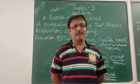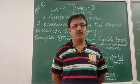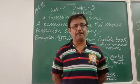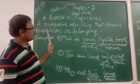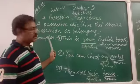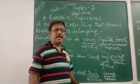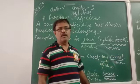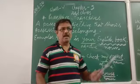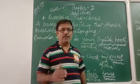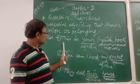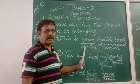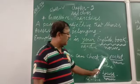Anyway, today I will teach you the 6th type: possessive adjectives. I have already taught you numbers 1 to 5, and this is the 6th — possessive adjectives. First of all, you have to understand what a possessive adjective is. The definition is: a possessive adjective shows possession or belonging. We use words like my, your, his, her, their, and after that you have to use one noun. Example: 'This is your English book' — 'English book' is the noun and 'your' is the possessive adjective. Another example: 'You can check my pocket' — 'pocket' is the noun and 'my' is the possessive adjective.